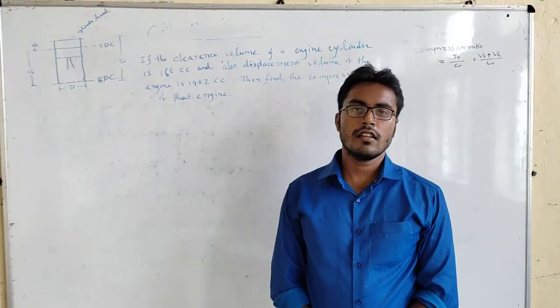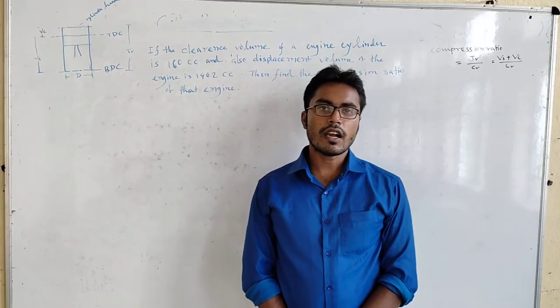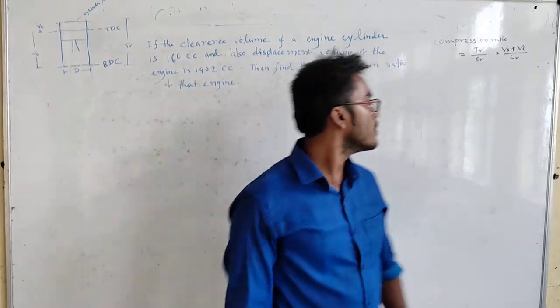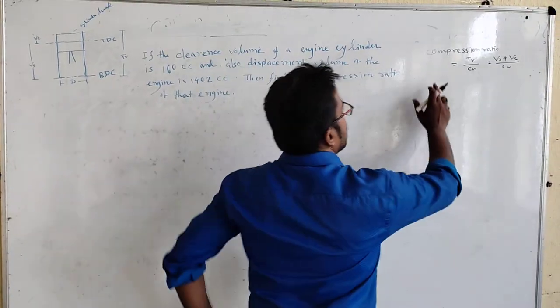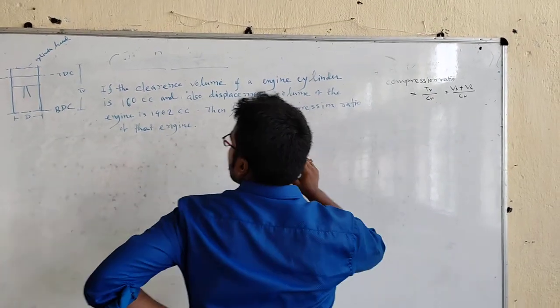Today, we have to calculate the compression ratio. The compression ratio is total volume by clearance volume.